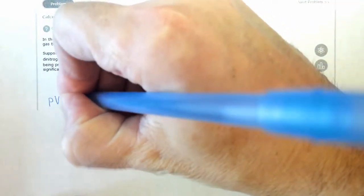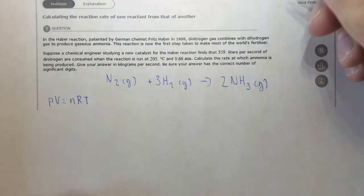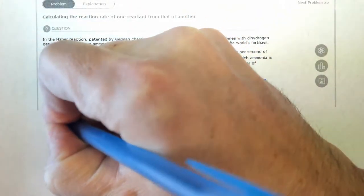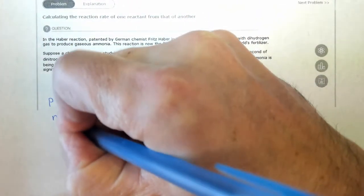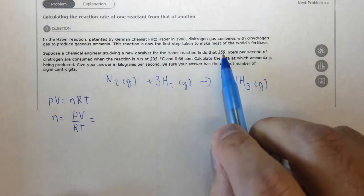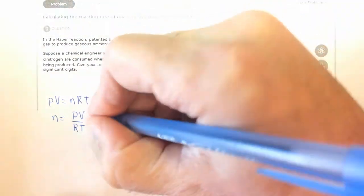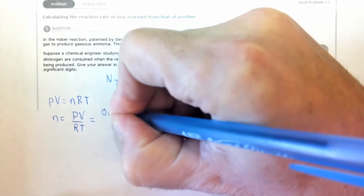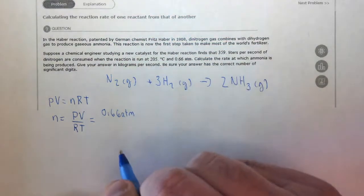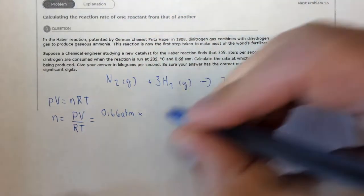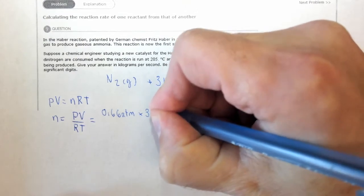So PV equals nRT, where n equals PV over RT. Plugging in, the pressure is 0.66 atmospheres, and that's only two significant figures, times the volume, it's already given in liters, 359 liters.